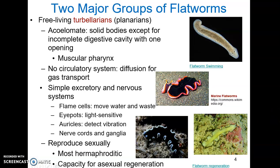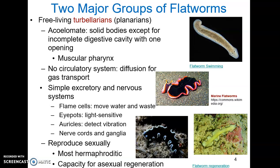Here we see a freshwater flatworm, a little more drab in appearance, and then some marine flatworms. Flatworms reproduce sexually — most are hermaphroditic, though copulation is required and they rely on internal fertilization of each other. They also have a tremendous capacity for asexual regeneration.